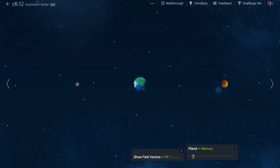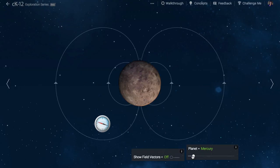If we navigate to Mercury, we can see that its magnetic field is much weaker than Earth's and also not as tilted. How do we know it's weaker? Well, the field lines are much more spaced out than for the Earth.